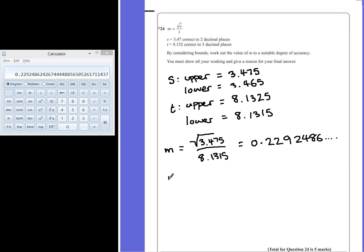So to find the smallest value of M, we need to have the smallest number on the top divided by the biggest value at the bottom. So if we look at our lower bound on the top, we're going to find the square root of 3.465 and divide that by the biggest value at the bottom, which will be our upper bound for t, which is 8.1325.